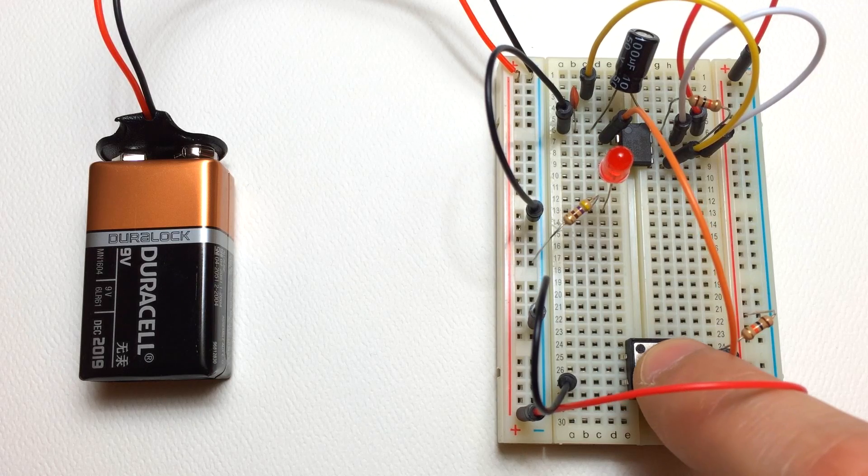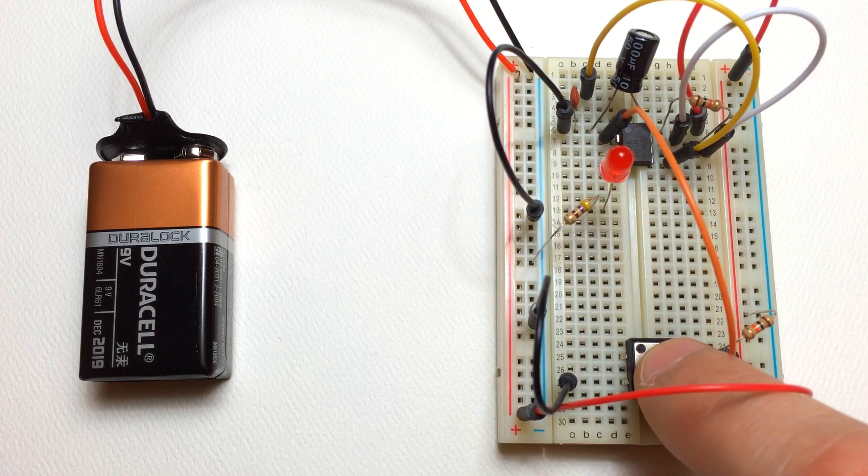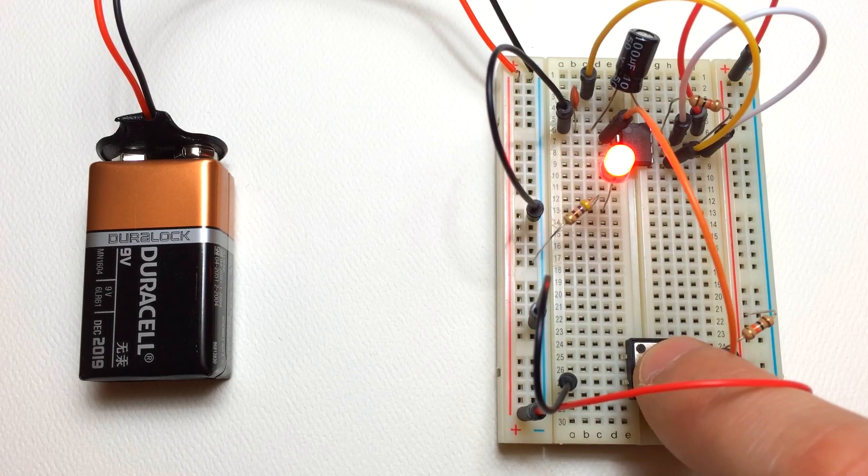You can see that the LED stays on for about a second before turning off. And that's a function of the resistance and capacitance in the circuit.